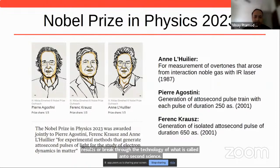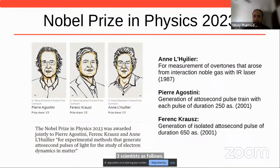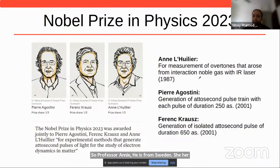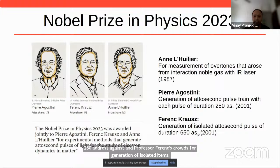The Nobel Prize citation states: the prize is awarded for experimental methods that generate attosecond pulses of light for the study of electron dynamics in matter. Professor Anne L'Huillier's cited work is the measurement of overtones from the interaction of noble gas with IR laser. Professor Pierre Agostini generated an attosecond pulse train with each pulse of duration 250 attoseconds, and Professor Ferenc Krauss generated an isolated attosecond pulse of duration 650 attoseconds.